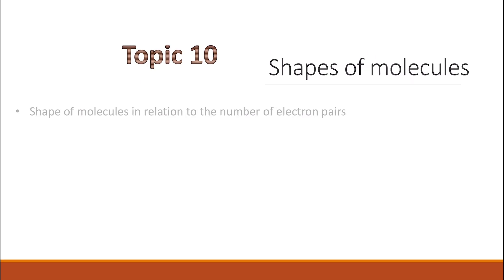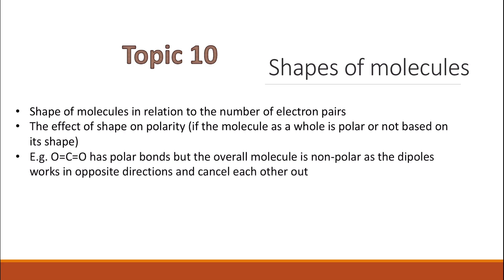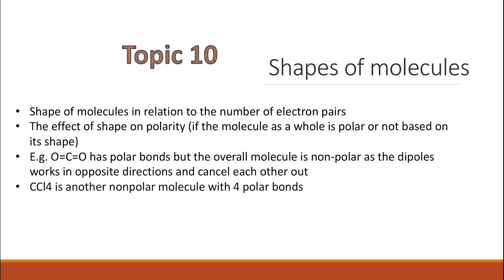Shapes of molecules in relation to the number of electron pairs — make sure you revise and know these very well. The effect of shape on polarity — which molecules will have a permanent dipole. Remember that carbon dioxide has polar bonds but no permanent dipole because the two dipoles act in opposite directions and cancel each other out. Carbon tetrachloride is another nonpolar molecule that has four polar bonds.